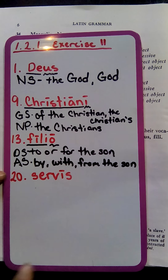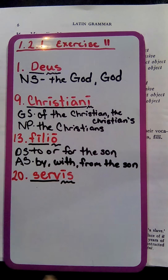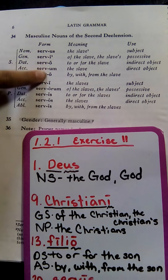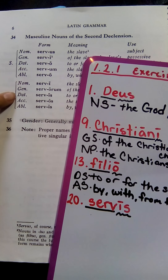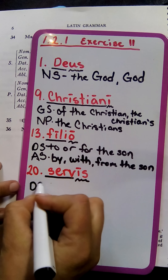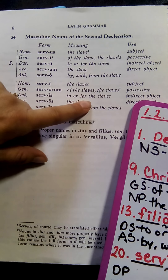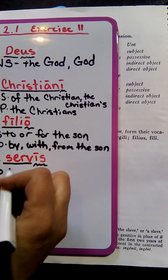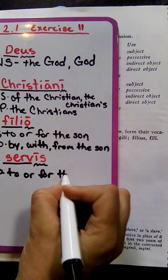Lastly, we have "servis." "Servis" has the stem of "serv" and the ending is long īs. We look back to our second declension masculine with the "us" endings, and we find that long īs is found twice: in the dative plural and the ablative plural. In the dative plural, much like the singular, it is "to or for" — but plural — so "to or for the slaves."